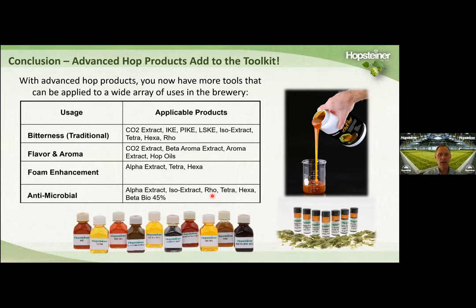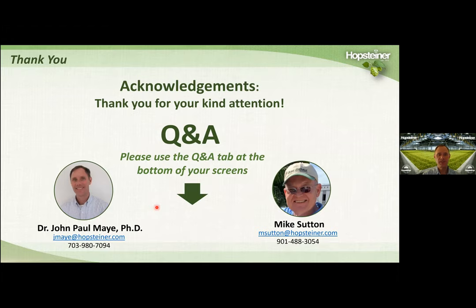For craft brewers doing yeast propagation at your brewery, you can add one or more of these hop products to your yeast tank to help inhibit gram-positive bacteria growth during yeast propagation. A lot of brewers like using Beta Bio primarily because it won't contribute any bitterness. It's relatively inexpensive, and because beta acids are generally insoluble in beer, it won't get into your final beer so it won't affect bitterness or flavor at all. With that, we'd be happy to end this presentation and take your questions.